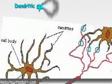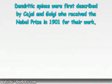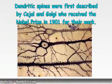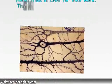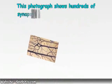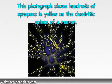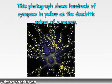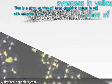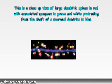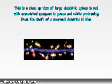Dendritic spines were first described by Cajal and Golgi, who received the Nobel Prize in 1901 for their work. This photograph shows hundreds of synapses in yellow on the dendritic spines of a neuron. This is a close-up view of large dendritic spines in red with associated synapses in green and white, protruding from the shaft of a neuron's dendrite in blue.